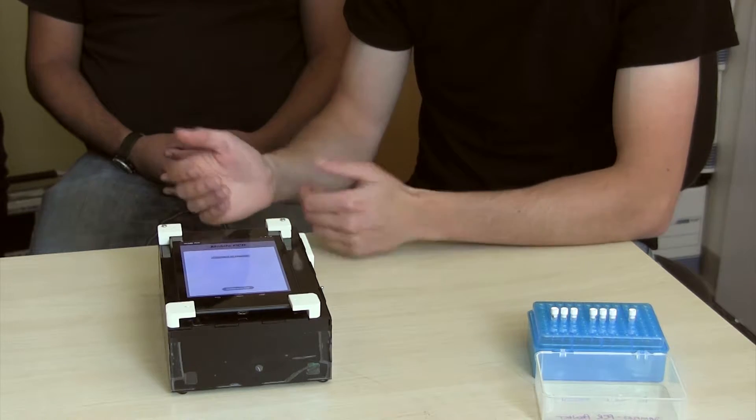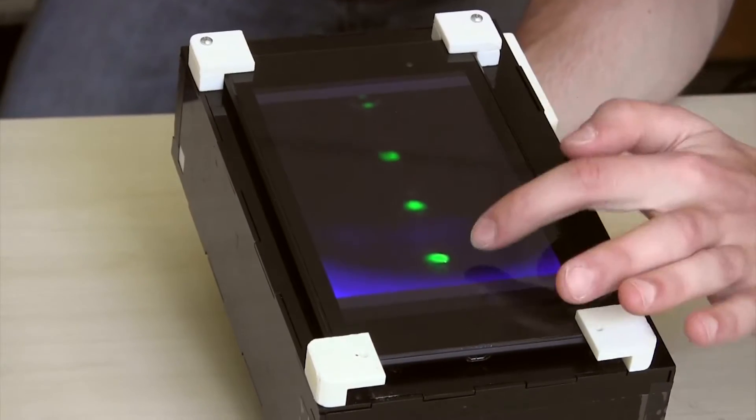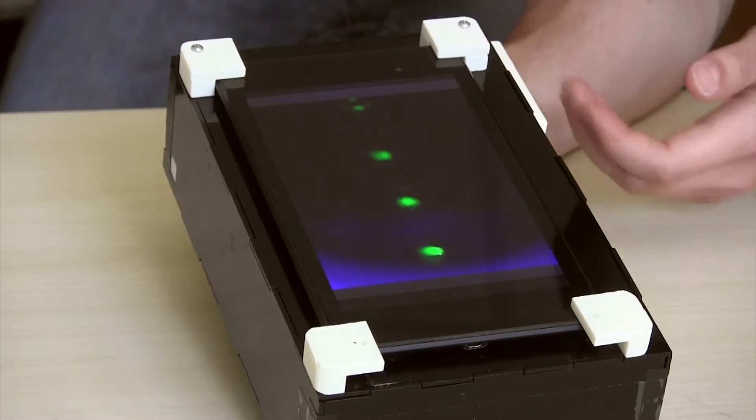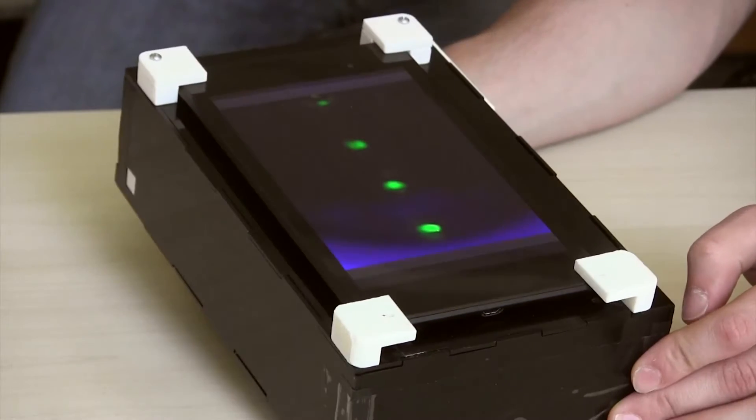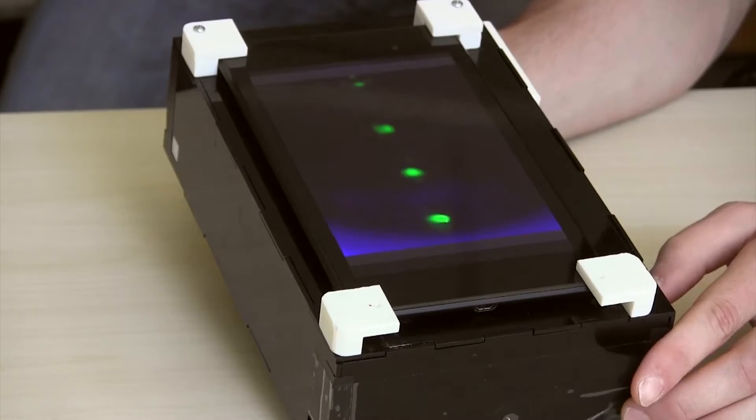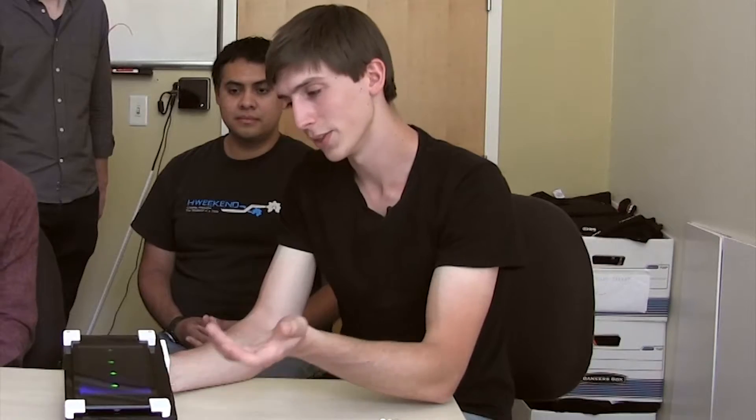This is what the samples actually look like to the tablet. You can see each of these green dots represents a sample, except for one of them which is for temperature measurement. The tablet can actually go through and analyze these dots to determine how green it is, so that determines relative fluorescence, and that's what we're actually measuring.